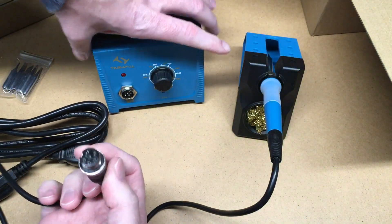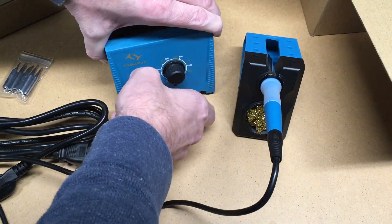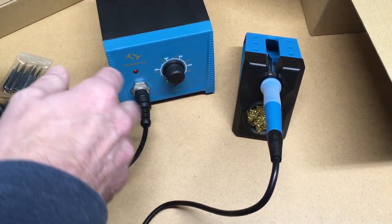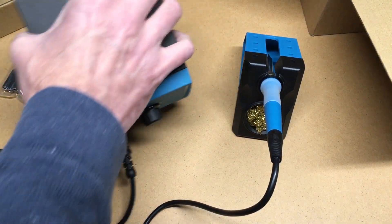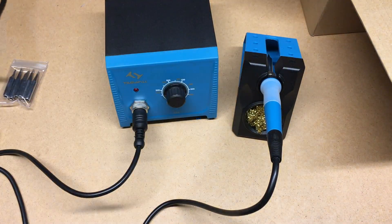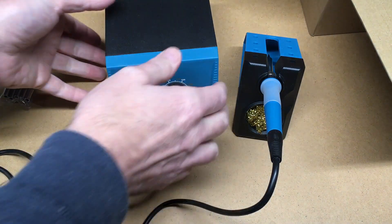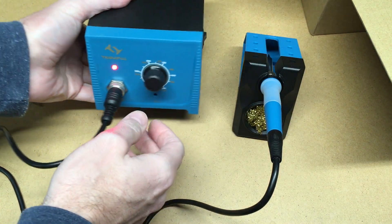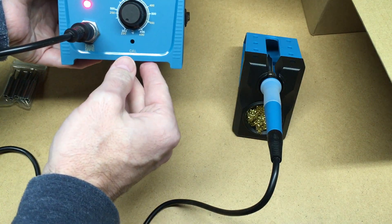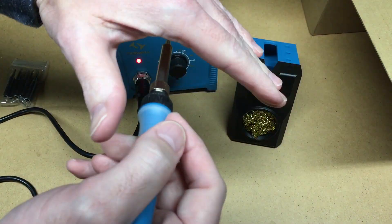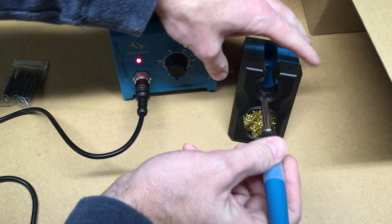I'll plug this in - it's keyed so it can only go in one way. There's a switch on the side. I'll turn that on and we're set to 392 degrees. I'll start to see this heat up.